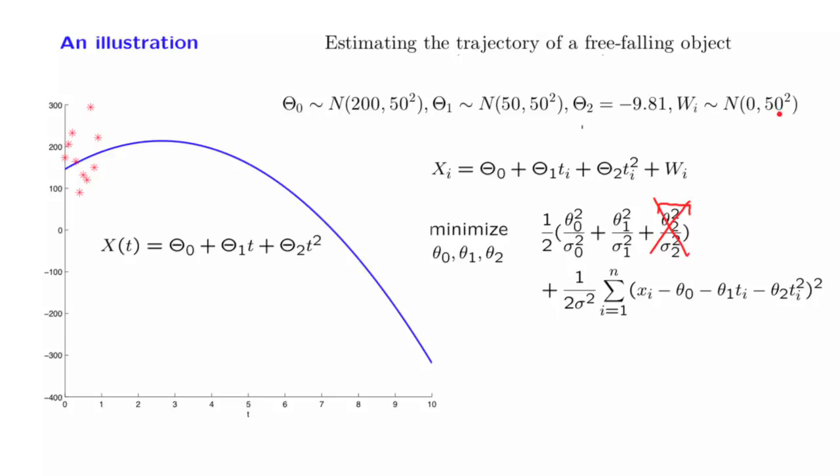We will take the variances of these basic random variables to be the same. And because of this, these constants here will all be the same. Therefore, we can take them outside this expression and outside the minimization. They will not matter, so we can remove them from the picture. The factor of 1 half can also be removed similarly. It does not affect the minimization.